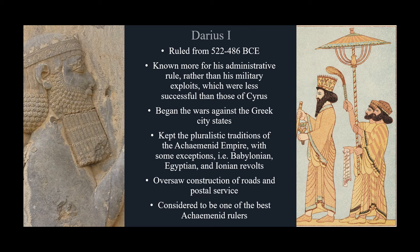Another very important Achaemenid king was Darius I, who ruled from 522 to 486 BCE. There was one king between Darius and Cyrus, named Cambyses, who was not considered to be a good king. Darius was known more for his administrative rule rather than his military exploits, which were less successful than those of Cyrus. Darius is also known for beginning the wars against the Greek city-states — probably his biggest mistake.